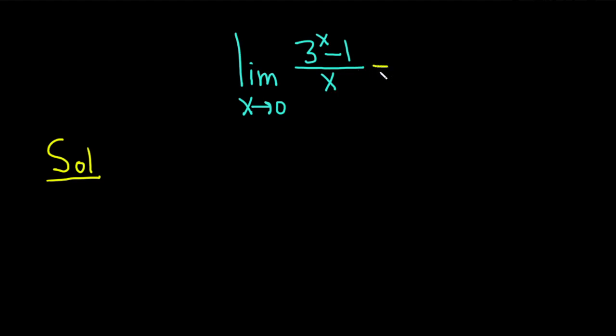If we do that in this particular case, we get 3 to the 0 minus 1 over 0. And 3 to the 0 is 1, so we get 1 minus 1 over 0. We get 0 over 0. That doesn't really work because that's undefined.